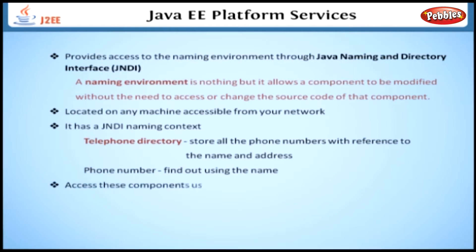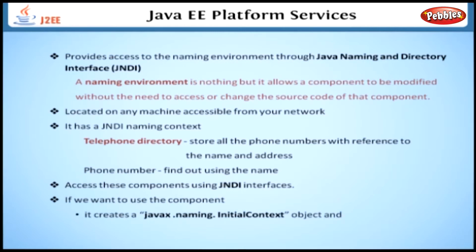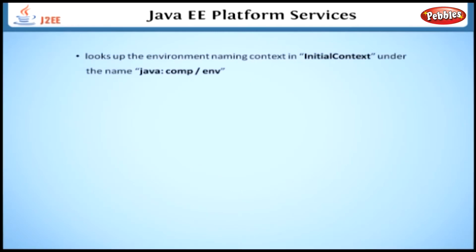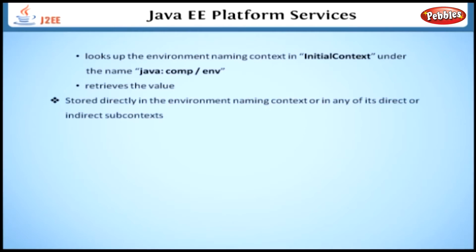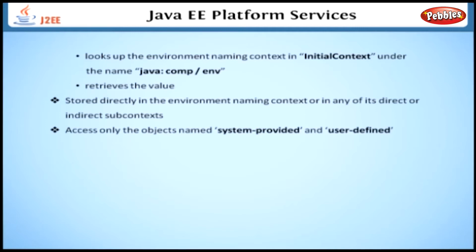We can access these components using JNDI interfaces. If we want to use a component, it creates a javax.naming.InitialContext object and looks up the environment naming context in InitialContext under the name java:comp/env and retrieves the value. A component's naming environment is stored directly in the environment naming context, or in any of its direct or indirect subcontexts. The Java EE component can access only the objects named: system-provided and user-defined.